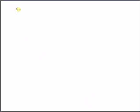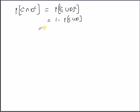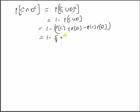Next is probability of C complement ∩ D complement, which equals probability of (C∪D) complement, equal to 1 minus probability of C∪D. This is 1 minus (5/8 plus 3/8 minus 15/64), which equals 15/64.